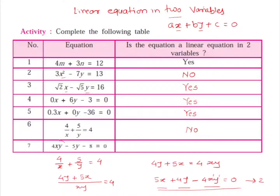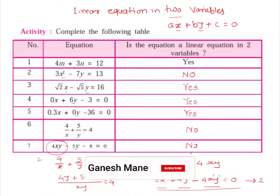In the last equation, 4xy minus 5y minus 8 equals 0, in the first term if we add the powers of x and y we get 2. That's why the degree of this polynomial is 2 again, which is not possible for a linear equation. So 4xy minus 5y minus 8 equals 0 is also not a linear equation in two variables.